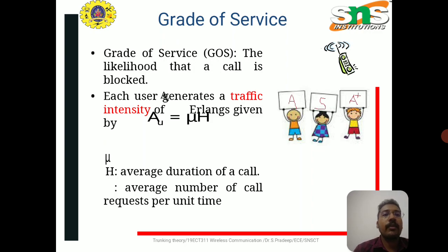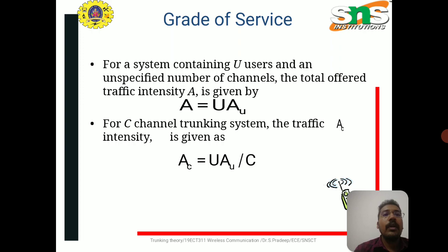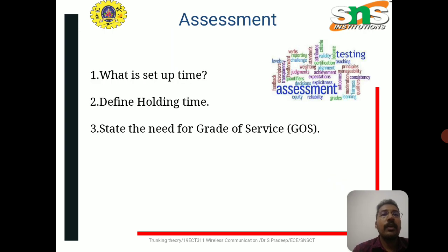Grade of service is the likelihood that a call is blocked. For a system containing U users and an unspecified number of channels, the total offered traffic intensity A is given by: A = U × A_u. For a C-channel trunking system, the traffic intensity A_c is given by: A_c = U × A_u / C. The assessment questions are provided on this slide.